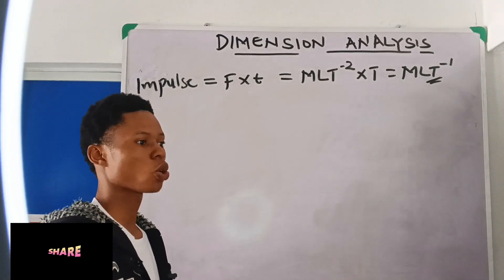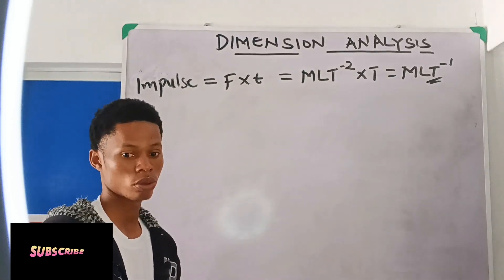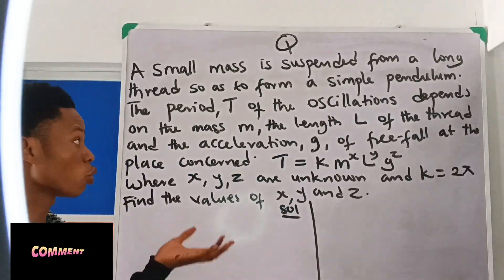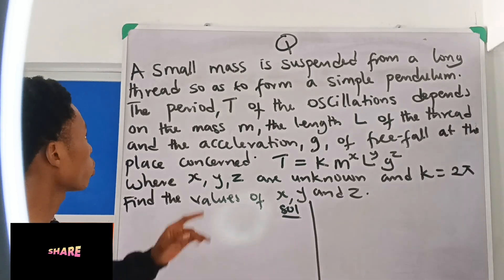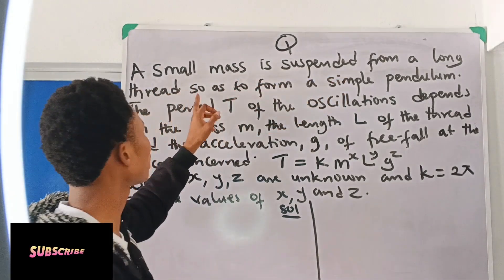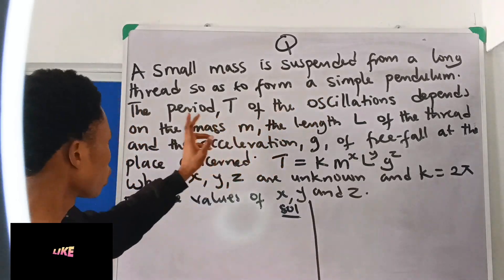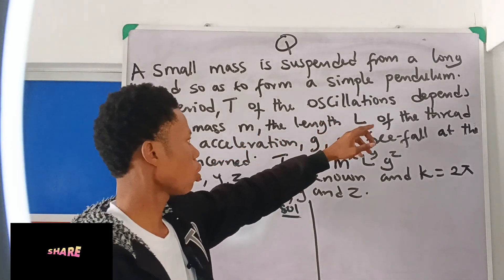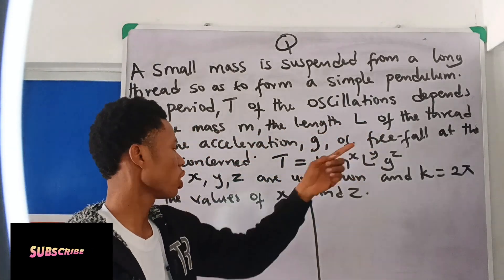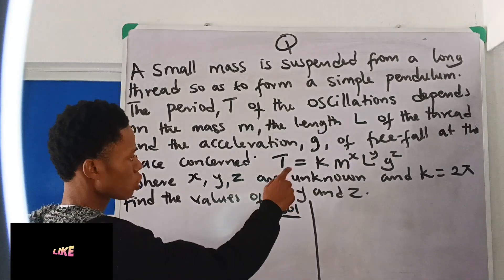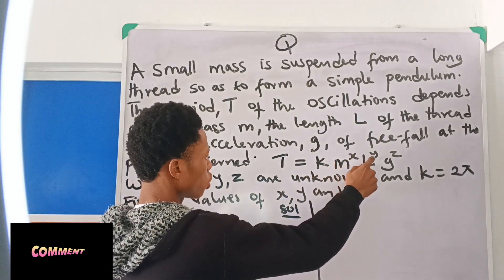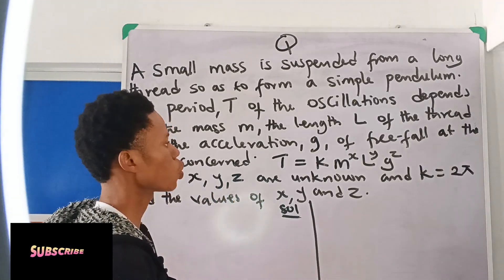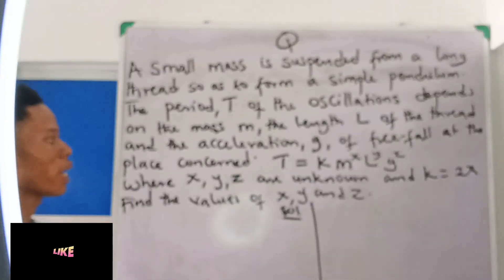Now let me take a calculation question. A small mass is suspended from a long thread to form a simple pendulum. The period T of the oscillations depends on the mass M, the length L of the thread, and the acceleration due to gravity G. We are given the equation T = K·Mˣ·Lʸ·Gᶻ, where X, Y, Z are unknown and K = 2π. Find the values of X, Y, and Z.